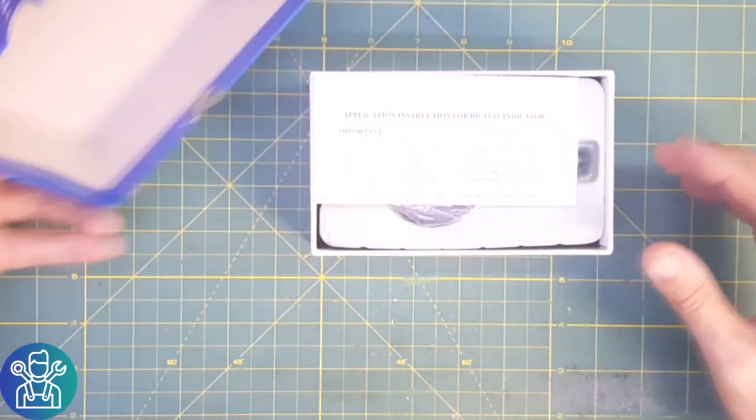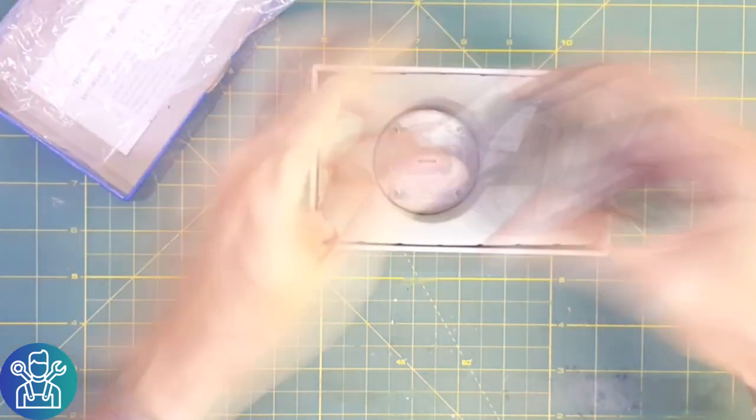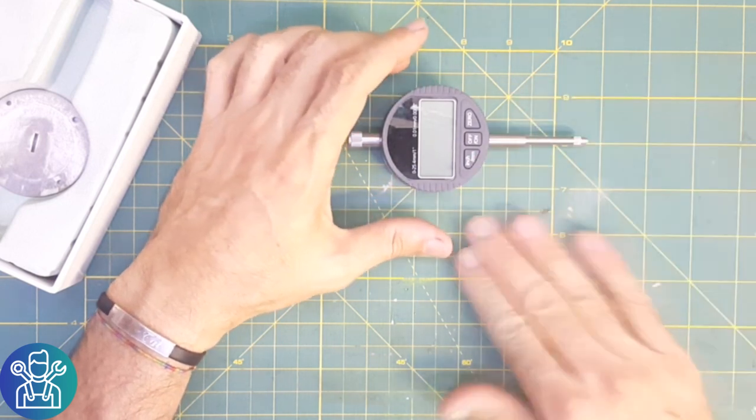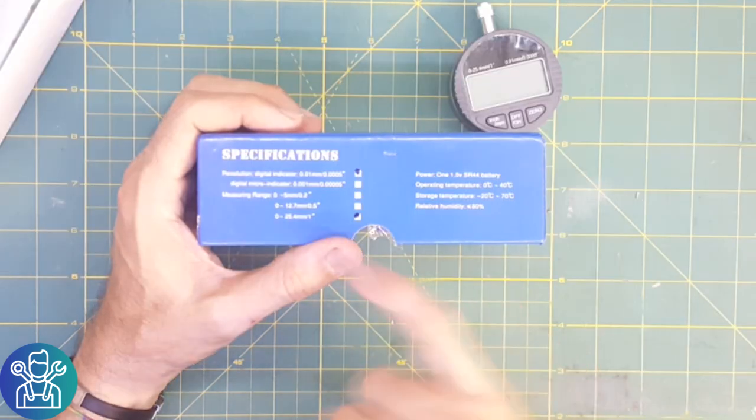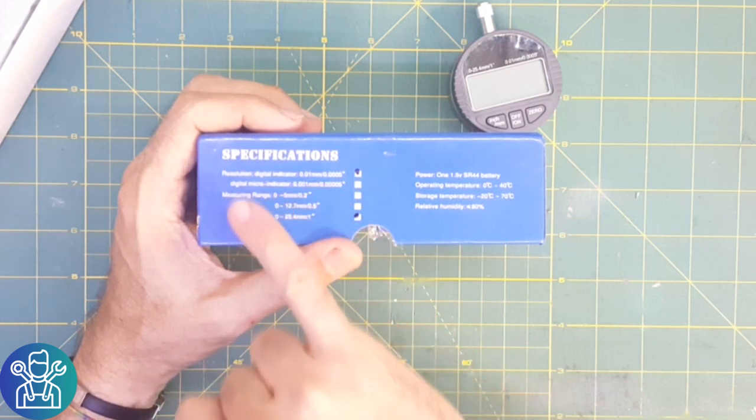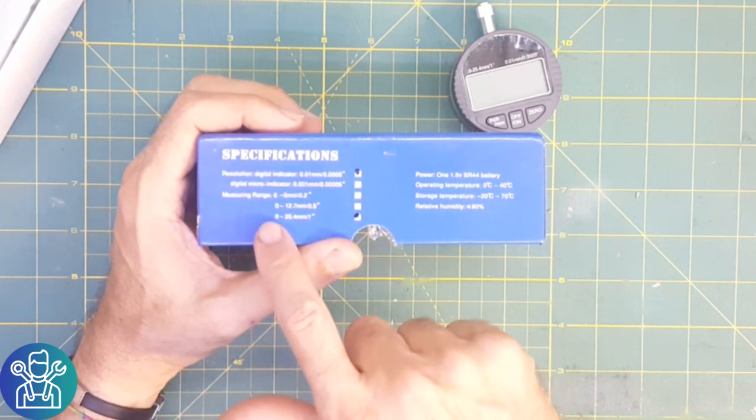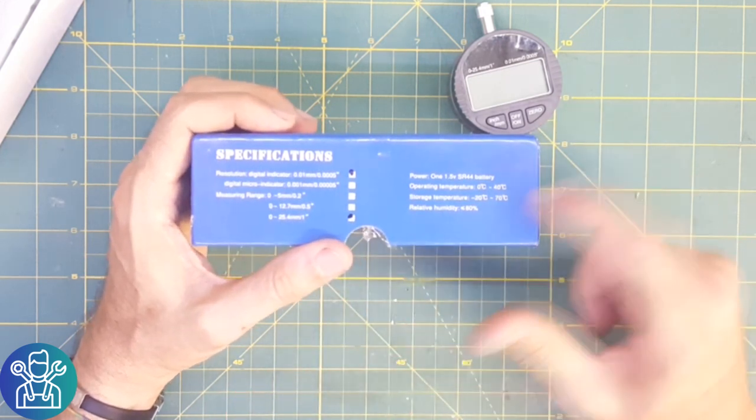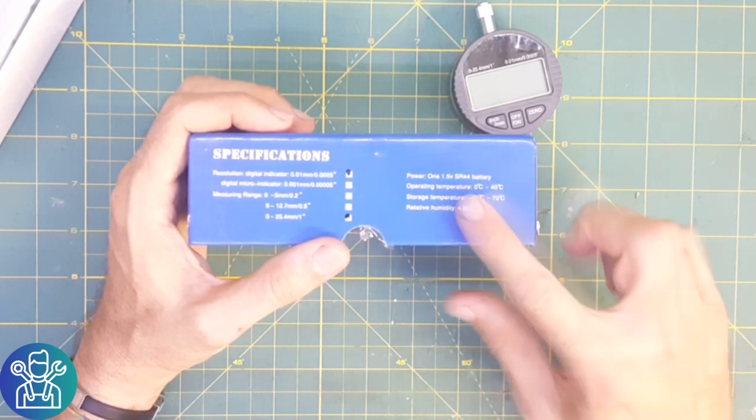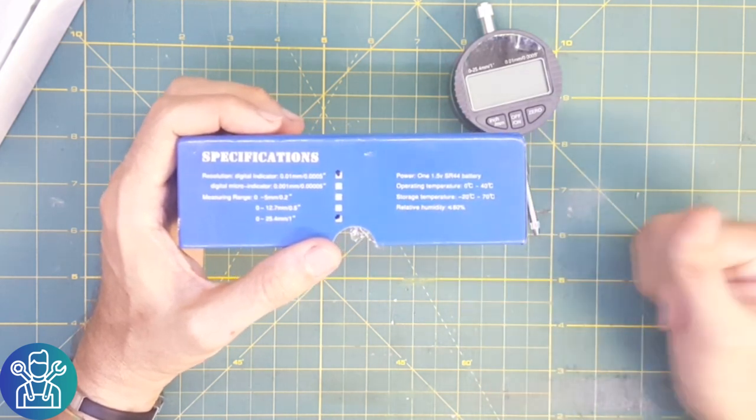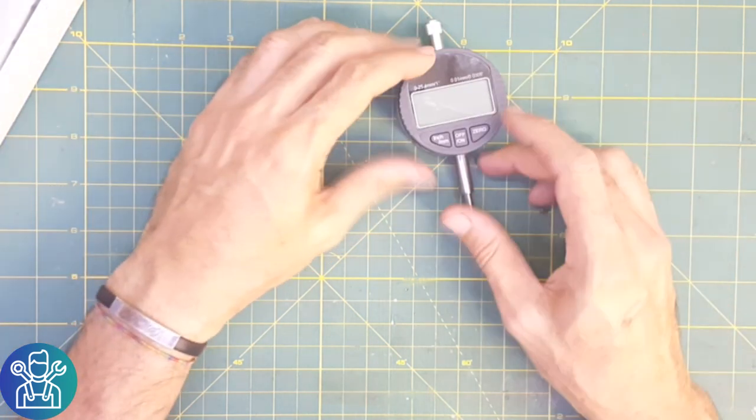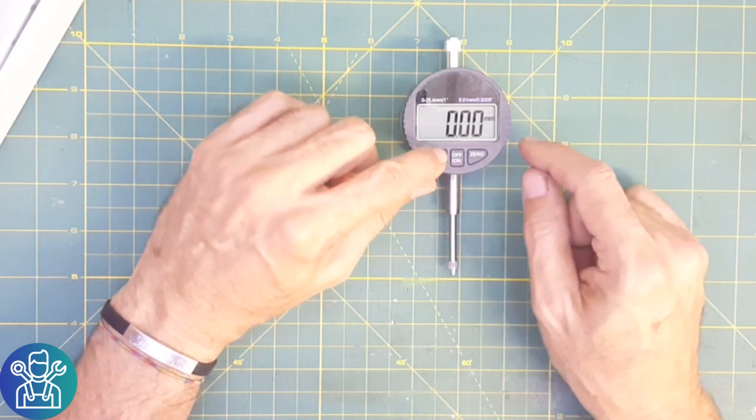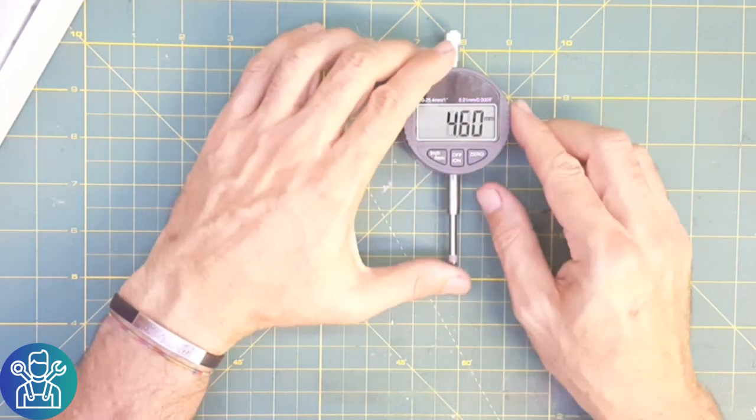The next package I already opened was a digital indicator. This indicator I'm going to use also for the mini lathe machine that I have. This one is 0.01 resolution and 0 to 25.4 millimeters in length. It uses small SR44 batteries. It has an on-off switch, you can change between inches and millimeters, and you can zero out.